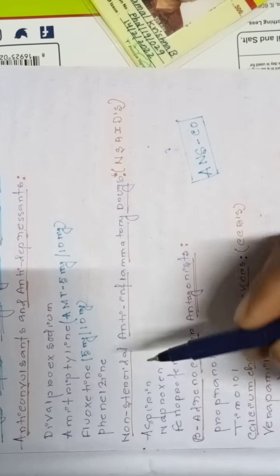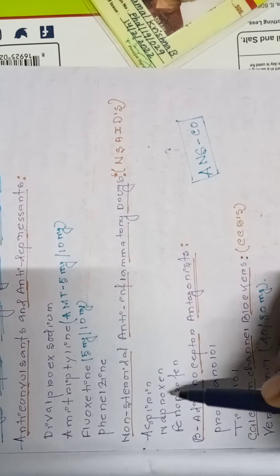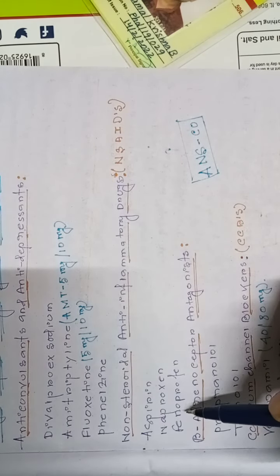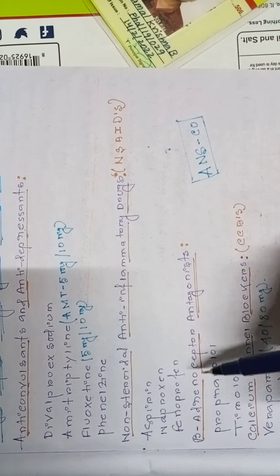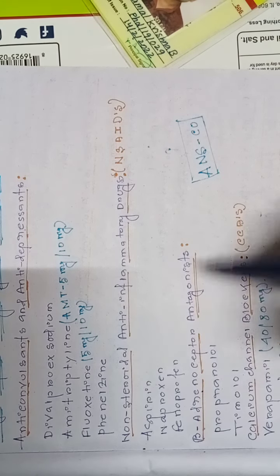Ibuprofen also comes under this class, along with aspirin, naproxen, and phenoprofen. Number three, that is beta adrenergic antagonists, or you can say beta blockers.